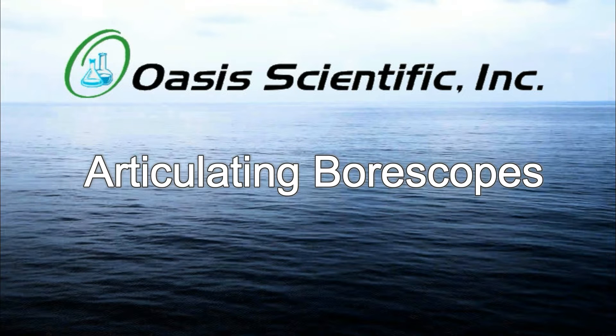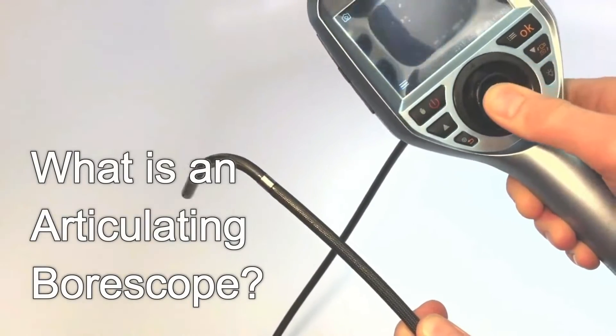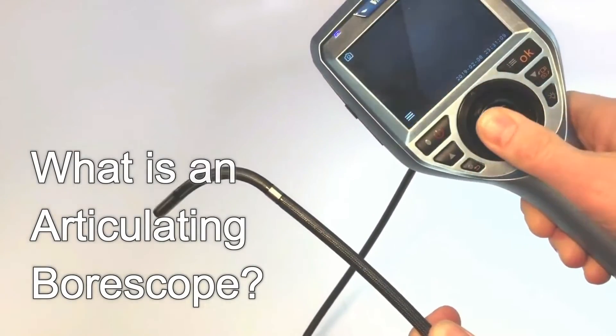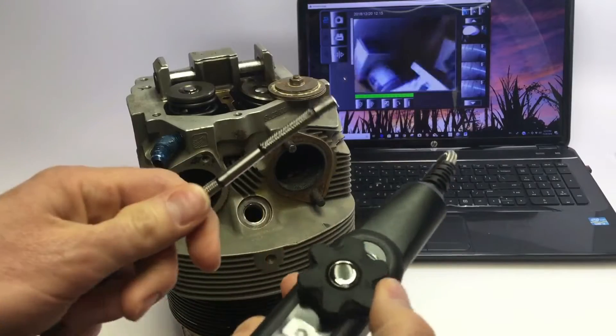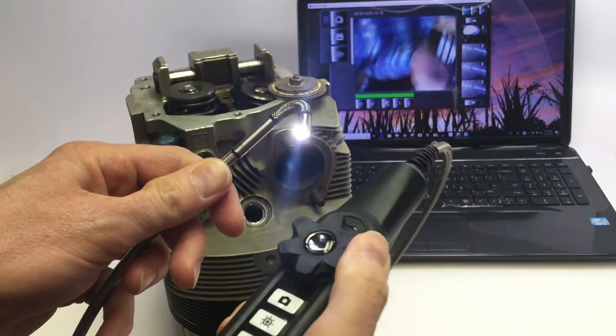This is a demonstration video explaining the types of articulating boroscopes on the market. What is an articulating boroscope? An articulating boroscope is an inspection camera which has a probe that can be bent back to different angles at the tip to view subjects from different visual perspectives.